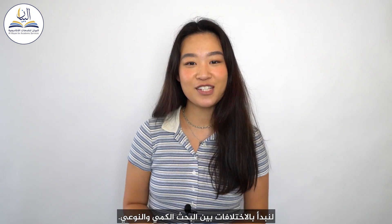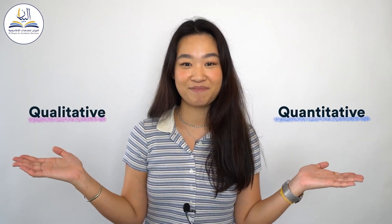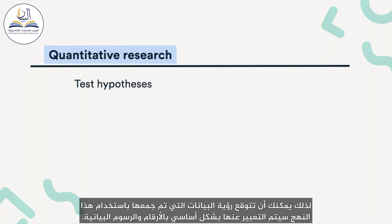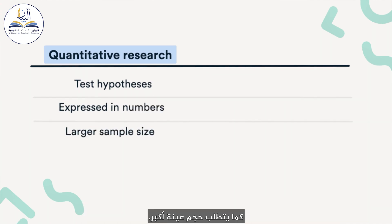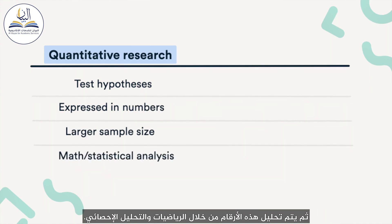Let's start with the differences between quantitative and qualitative research. Quantitative research allows you to test hypotheses, so you can expect data collected with this approach to be mainly expressed in numbers and graphs. It also requires a larger sample size. These numbers are then analyzed through math and statistical analysis.